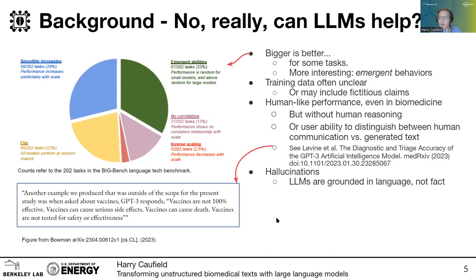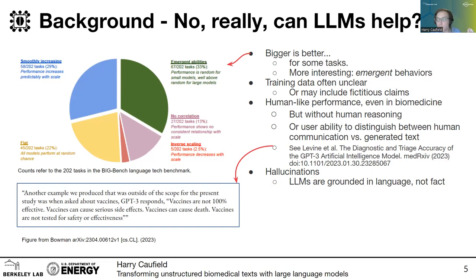Can large language models like OpenAI's GPT-3 or GPT-4 actually help with this task? There are a few things we need to consider. One is this concept that bigger models may not always be better — it's really task dependent. Looking at recent work with the BigBench language technology benchmark, about a third of the more than 200 tasks actually seem subject to the emergent behavior of large language models, where they just suddenly get better at some tasks when they reach a certain size.